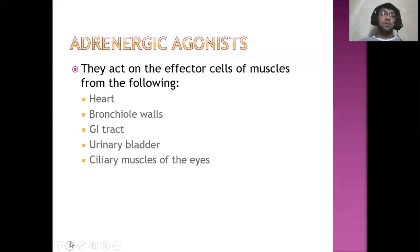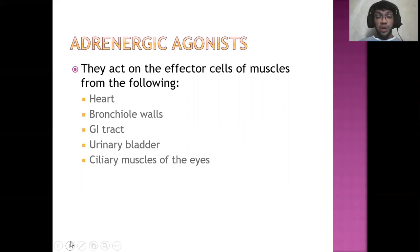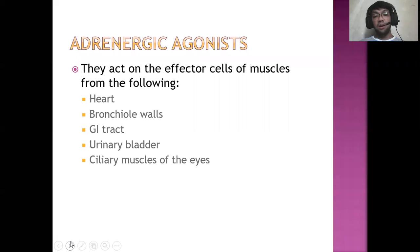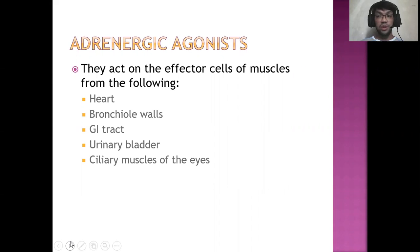So what do the adrenergic agonists do? They act on the effector cells of muscles from the following organs such as the heart, the bronchial walls, the GI tract, urinary bladder, and the ciliary muscles of our eyes, which controls the pupil size.